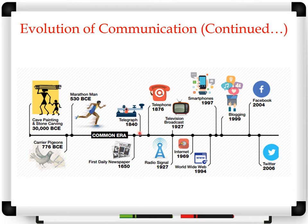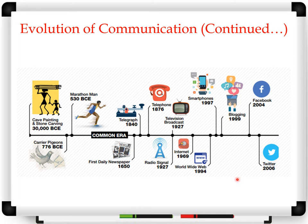The drastic change in the field of communication took place in the middle of the 19th century when electricity was invented. After the invention of electricity, a number of technologies evolved — telegraph, telephone, radio transmission, television broadcasting, and mobile communication. After the invention of the internet, nowadays we use different social media and internet techniques for communication, like the web, blogging, Facebook, Twitter, and WhatsApp. Communication is now very fast, and within fractions of seconds we can communicate from one side of the earth to the other. That is the evolution of communication.